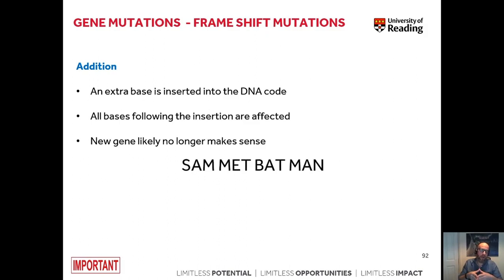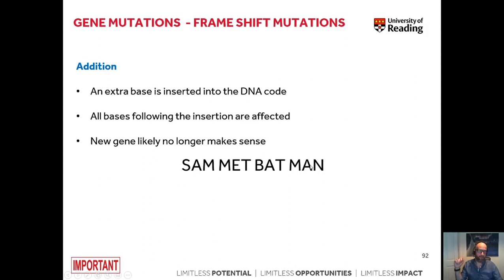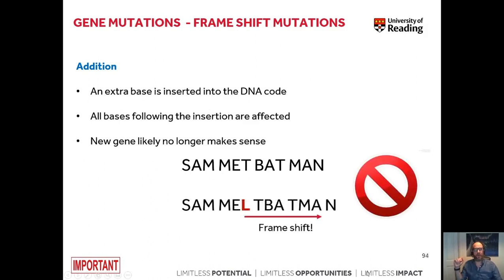To highlight the consequences of an addition, consider a random triplet code that makes sense as a sentence: 'Sam met bad men.' All of those triplets make sense. However, if we add one letter to the code, we change all of the subsequent triplets as well — producing a frame shift.